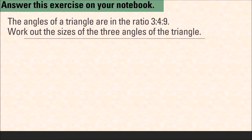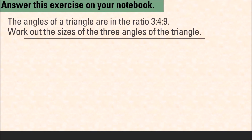Let's check your work. The angles of a triangle are in the ratio 3 is to 4 is to 9. Work out the sizes of these three angles. In this problem not all information is explicitly given, but we know from our other lessons that the sum of angles in a triangle is equal to 180 degrees. So this question is equivalent to sharing 180 into the ratio 3 is to 4 is to 9.